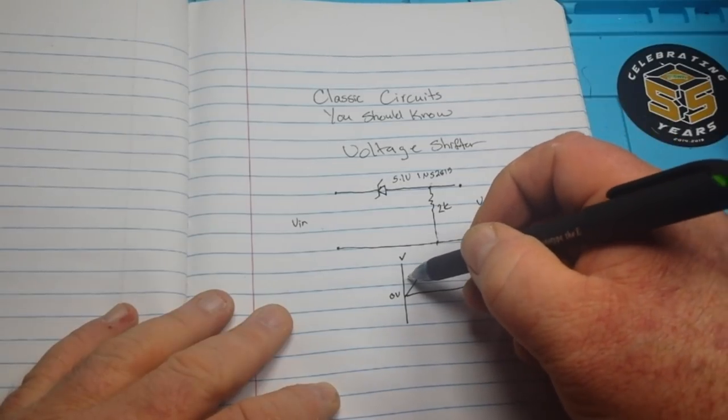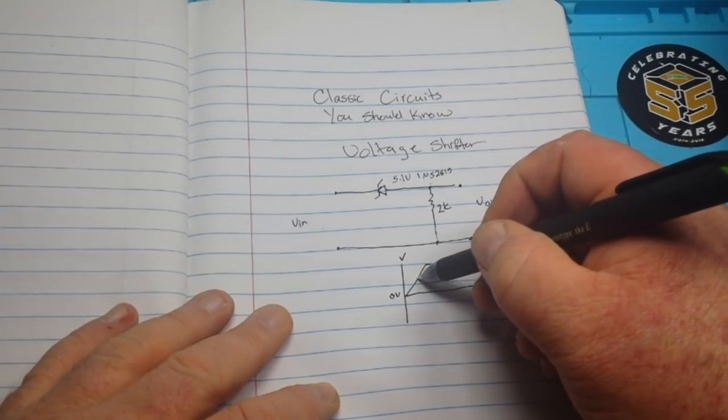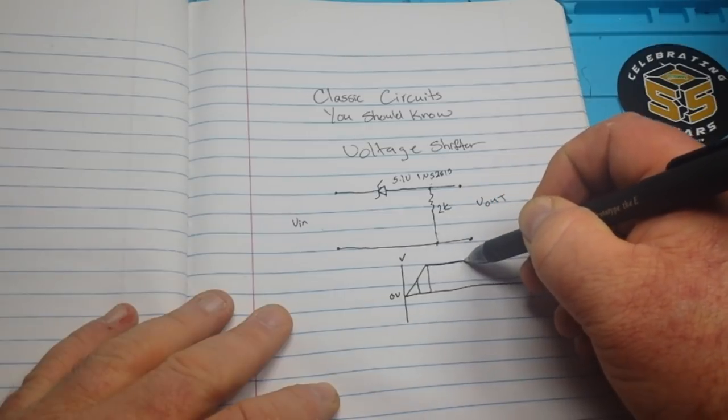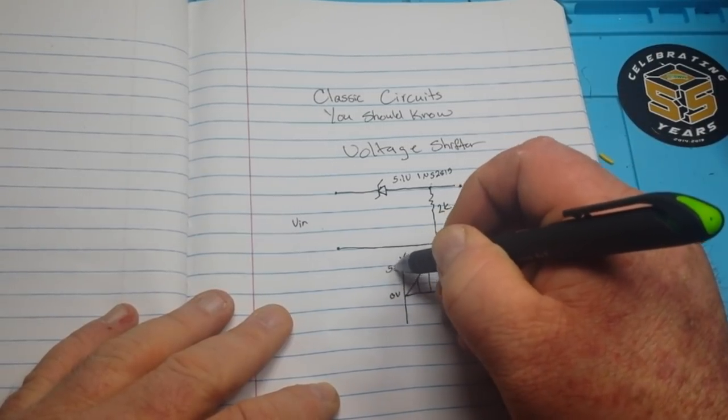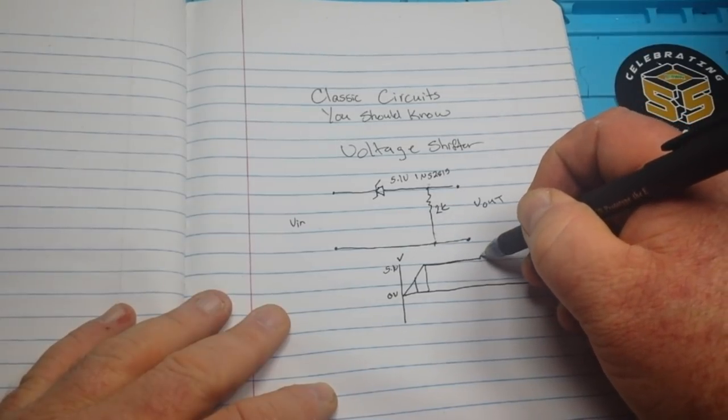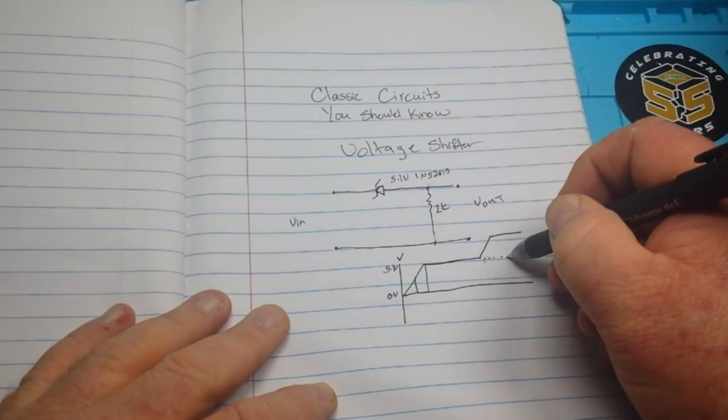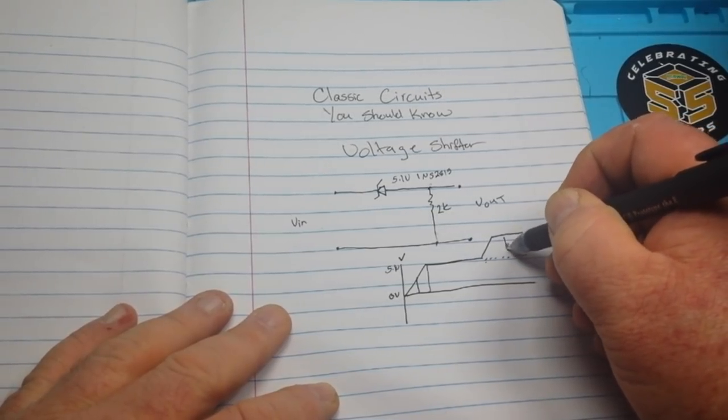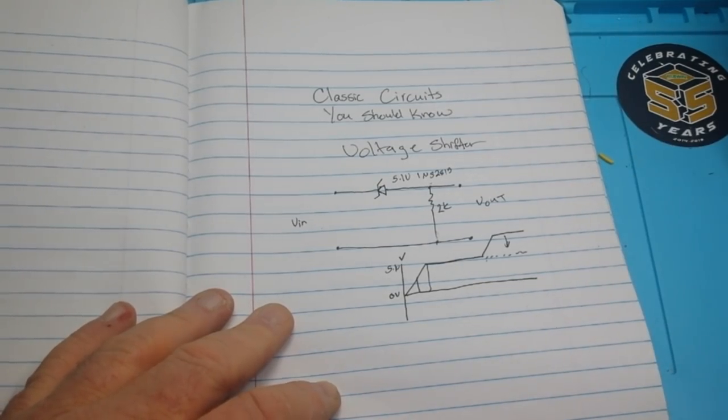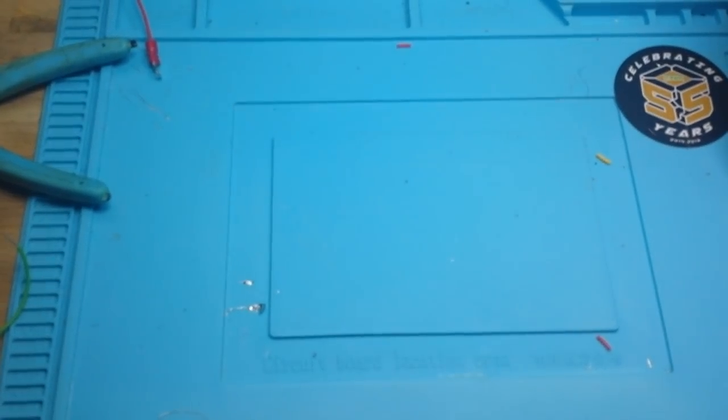And then we have our V out which is kind of like this. So this would be 5.1 volts, and as our V in goes up, our V out will be shifted down by the 5.1 volts or the breakdown voltage of the zener. Are you with me so far? Great.